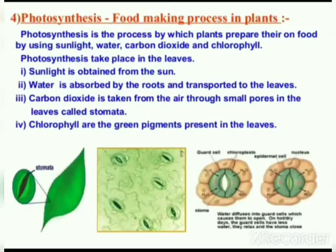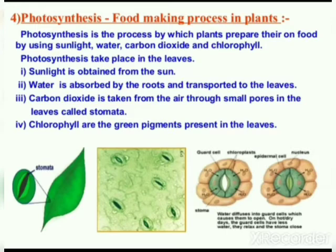First, let's know about the process of photosynthesis. Photosynthesis is the food-making process of plants. It is the process by which plants prepare their own food by using sunlight, water, carbon dioxide, and chlorophyll.